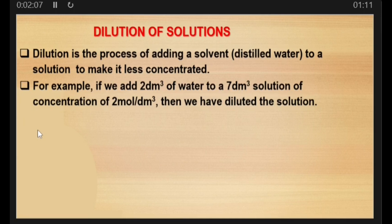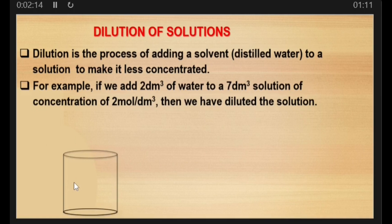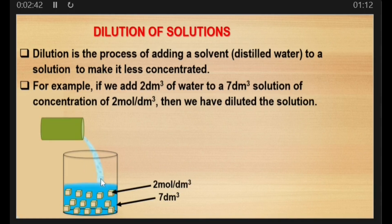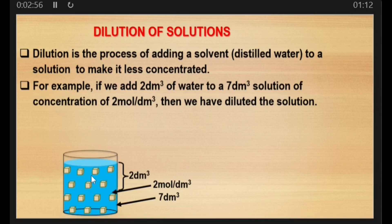At a concentration of two moles per cubic decimeter, then we have diluted the solution. Looking at this diagram, we have a beaker containing some moles of a solute dissolved in it. The volume here is seven cubic decimeters and the concentration is two moles per cubic decimeter. We then add two cubic decimeters of water, and the particles become scattered throughout the solution, making it less concentrated.